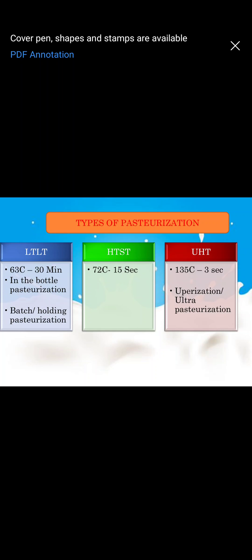Moving on to the types of pasteurization: there are LTLT, HTST, and UHT. LTLT is low temperature long time — you keep the milk at a low temperature for a long holding time. The temperature is 63 degree centigrade maintained for 30 minutes. There are two types: in-bottle pasteurization and batch or holding pasteurization. This is the pasteurization we generally do in our houses also.